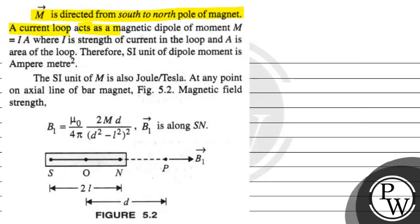A current loop acts as a magnetic dipole of moment m, where m is i times A, where i is the strength of magnetic current in the loop and A is area of the loop. Therefore, the SI unit of the dipole moment is ampere meter square. The SI unit of m is also joule per tesla.